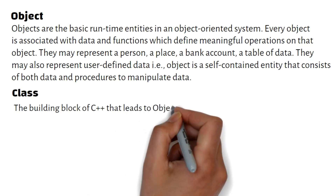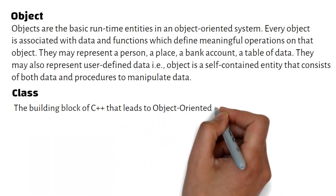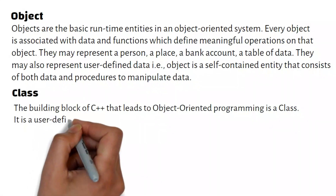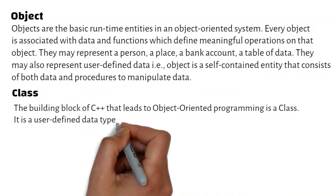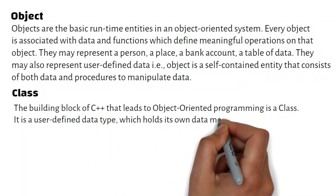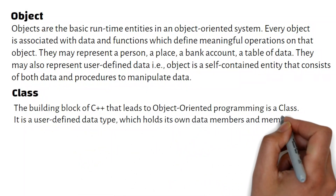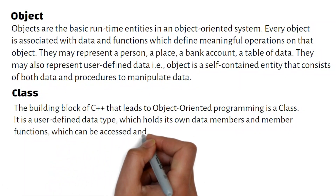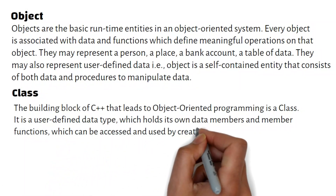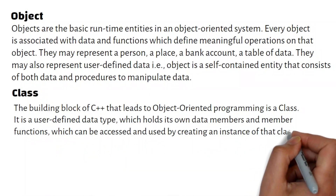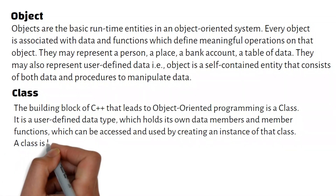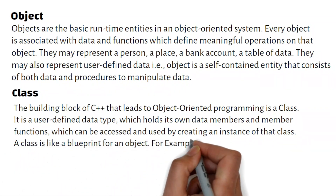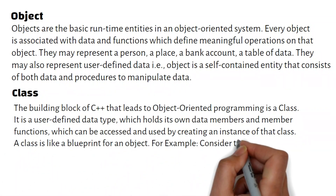Class. The building block of C++ that leads to object-oriented programming is a class. It is a user-defined data type which holds its own data members and member functions, which can be accessed and used by creating an instance of that class.